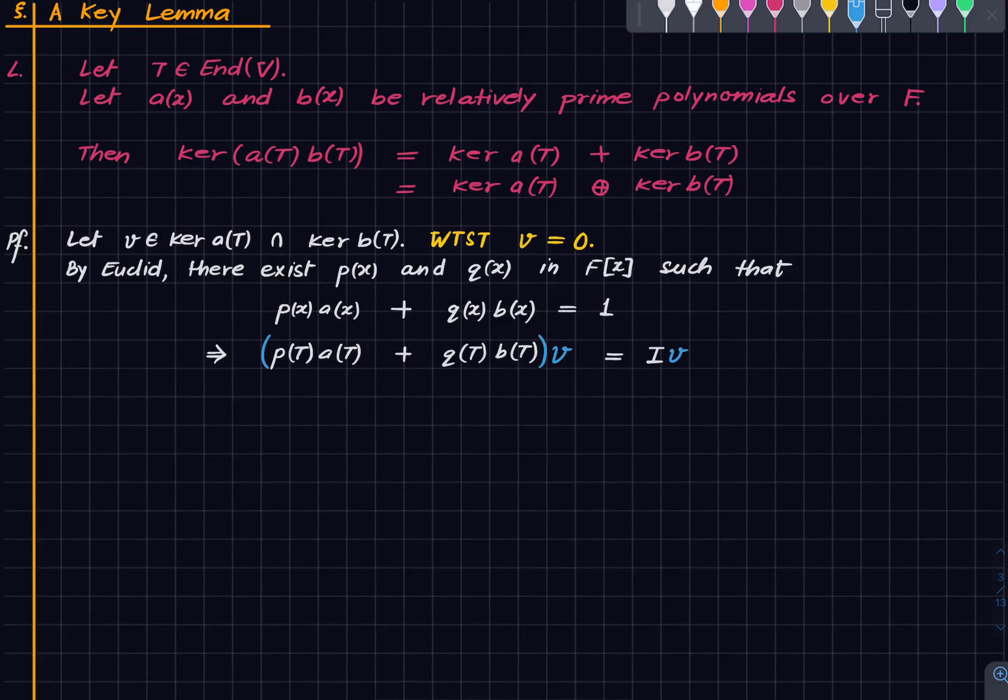But what is the left side? The left side is this. And the right side is v. But this is 0 and that is 0 because v is in the kernel of a(T) and the kernel of b(T). We get 0 is equal to v. And this proves the first thing that we wanted to establish, that is this equality.